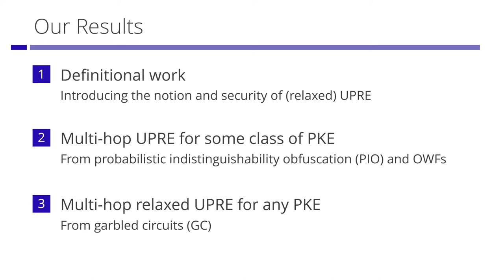In this work, we present definitions of UPRE and constructions of UPRE. The first scheme is a multi-hop UPRE scheme for some class of PKE, based on probabilistic indistinguishability obfuscation and one-way functions. The second scheme is a multi-hop relaxed UPRE scheme for any PKE, based on garbled circuits.